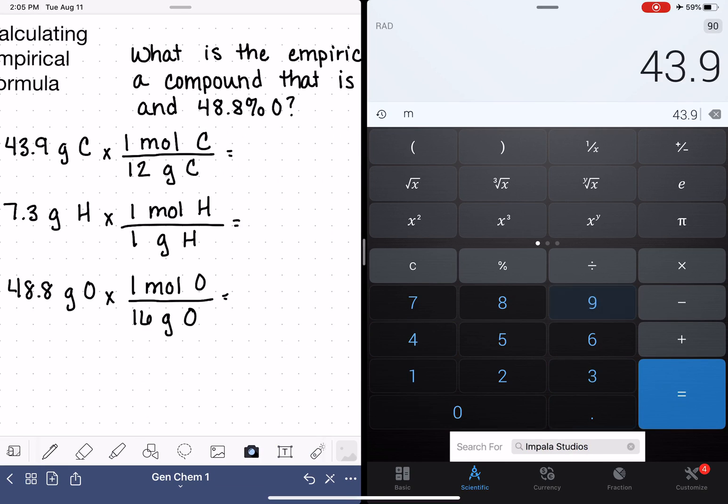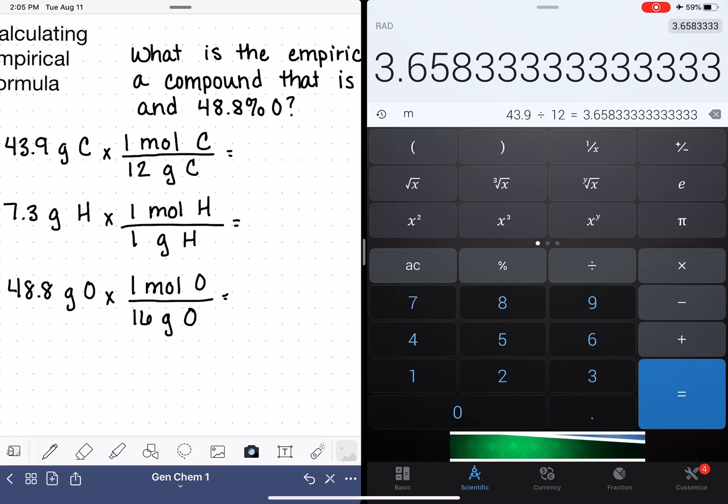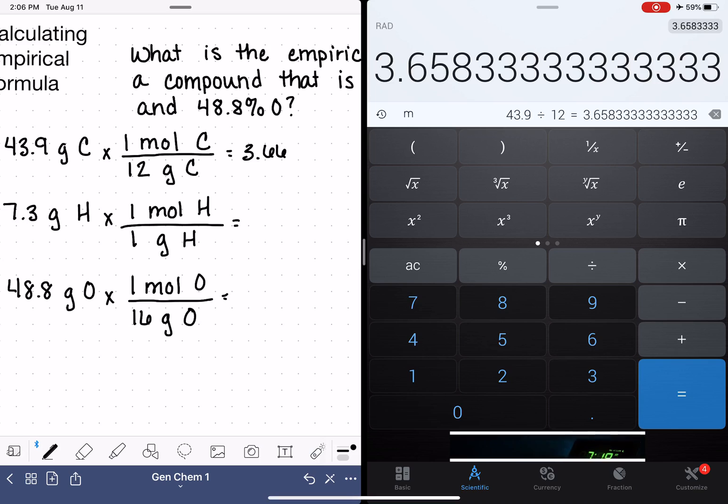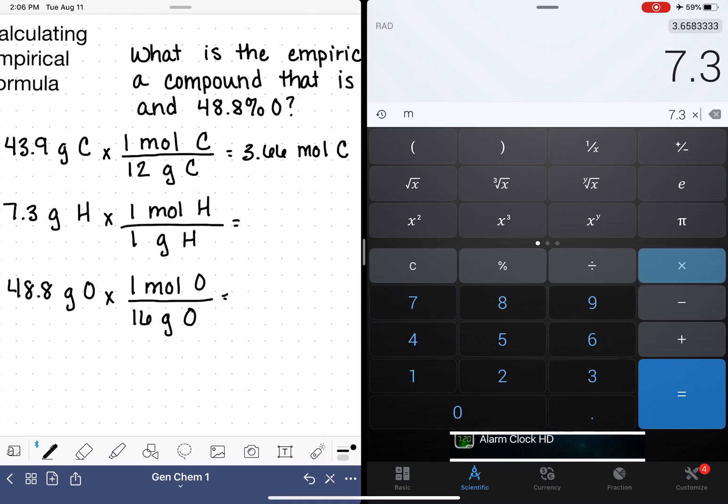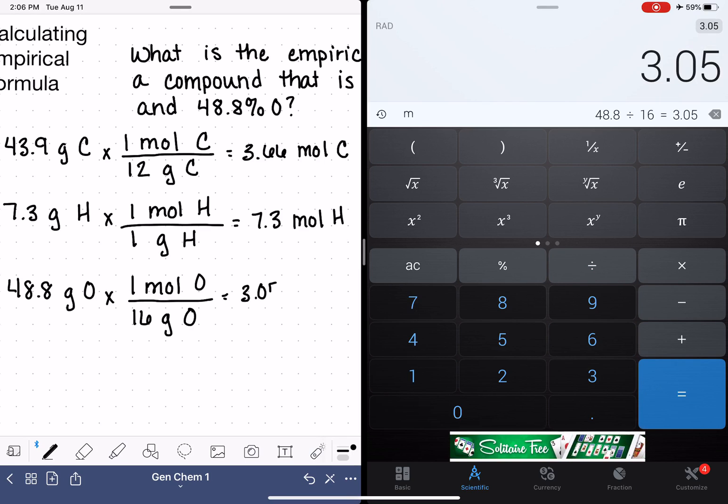43.9 divided by 12 is 3.66 moles of carbon. 7.3 divided by 1 is 7.3 moles of hydrogen. And 48.8 divided by 16 is 3.05 moles of oxygen.